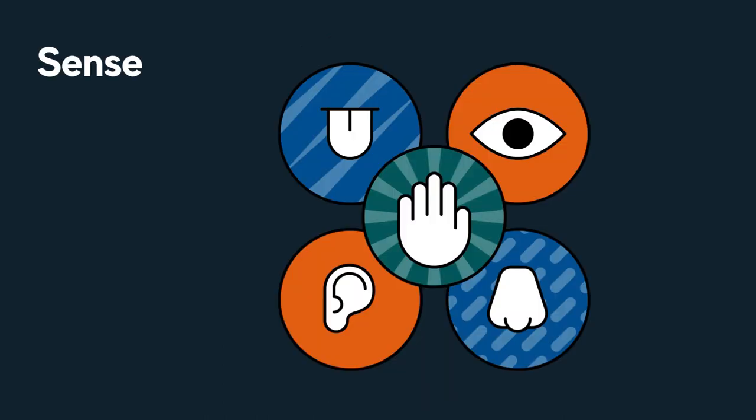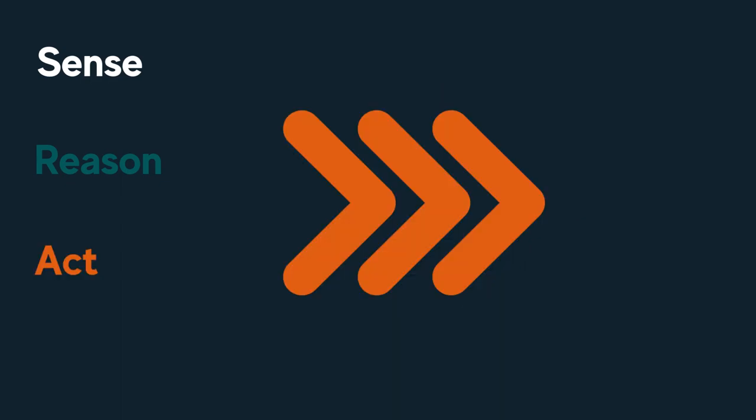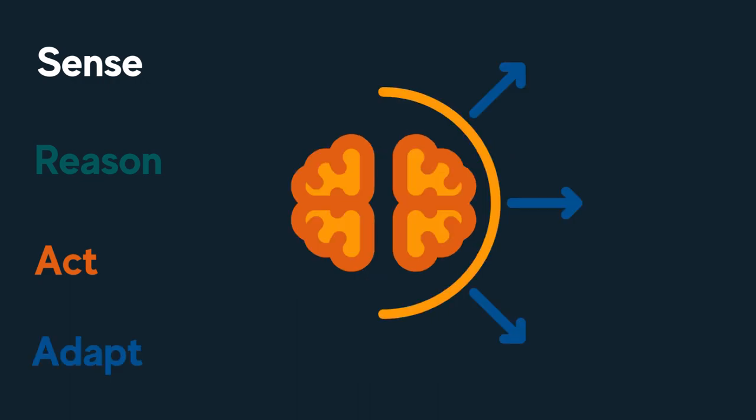Let's think about this. What do we mean by human intelligence? What makes us intelligent as humans? As humans we can sense — we use our senses, we can hear, feel, touch, see and smell. We can reason; we have the ability to make decisions based on information we receive. And we perform an action based on the decision we make. And we can adapt and learn from the results of our actions.